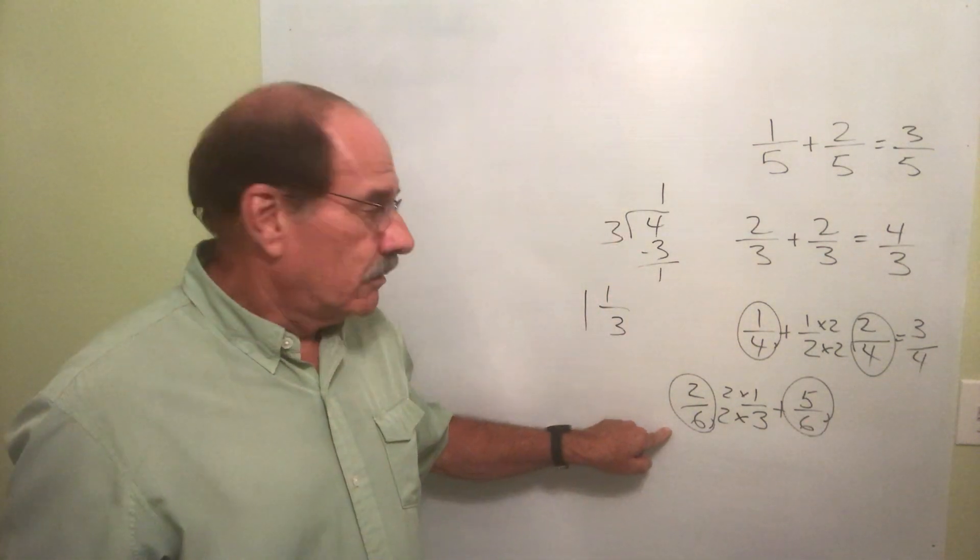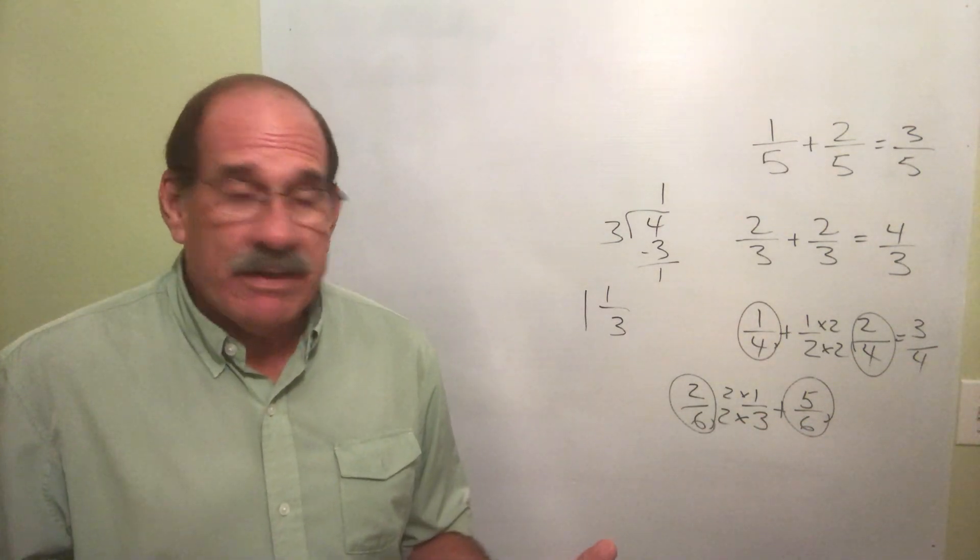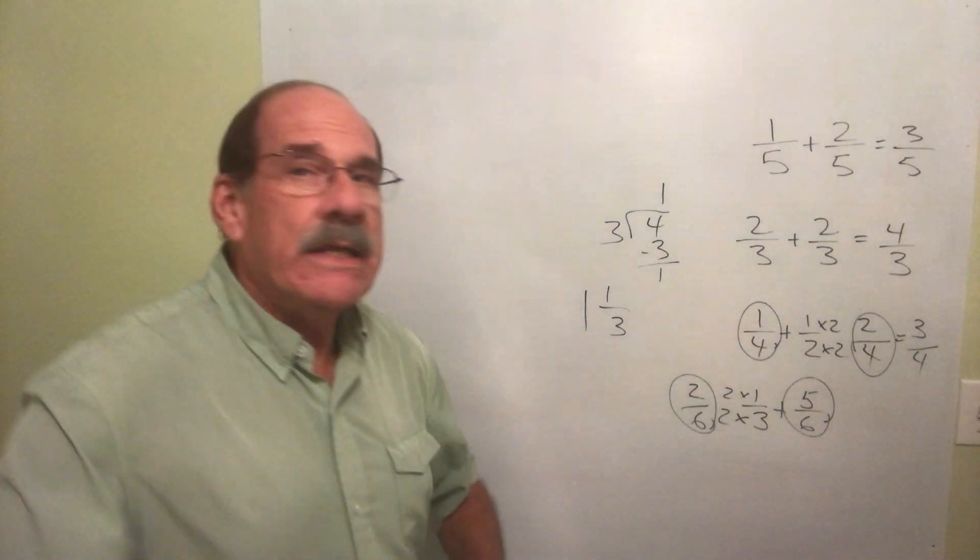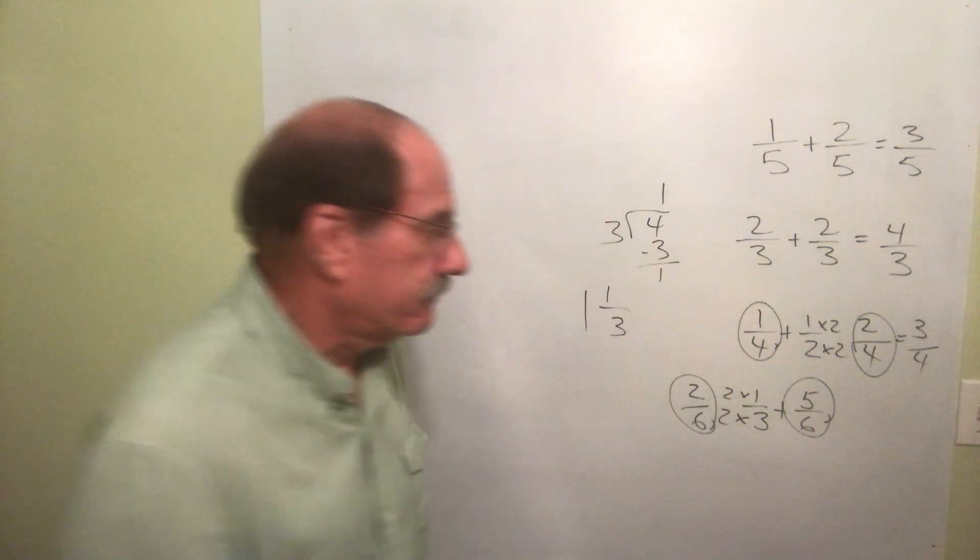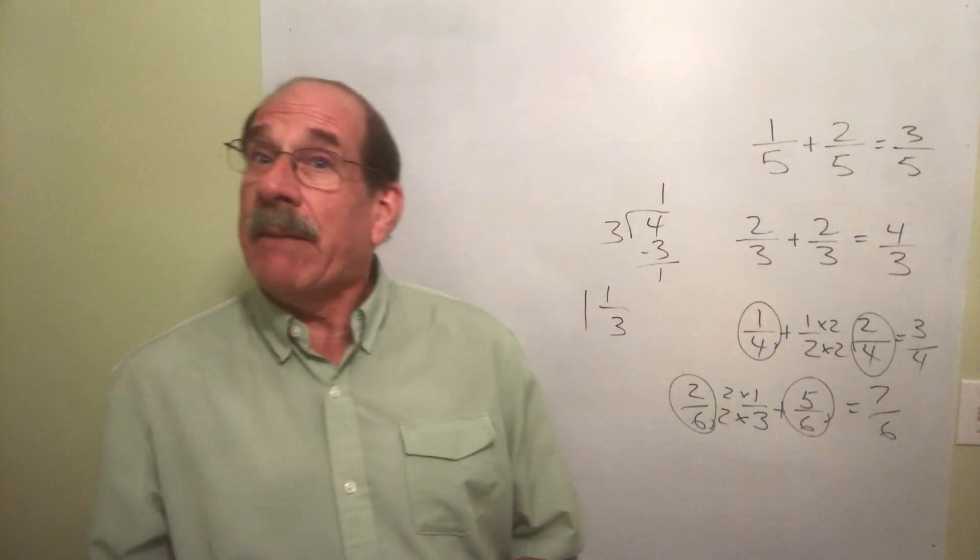I have a common denominator. I'm ready to add the two top numbers. Two plus five is seven. Seven-sixths. But we've got a problem.